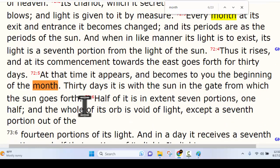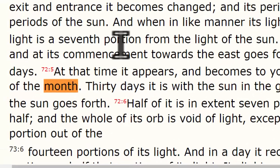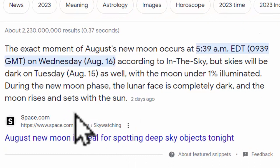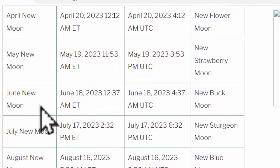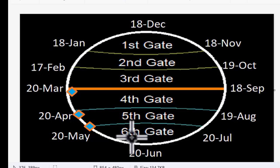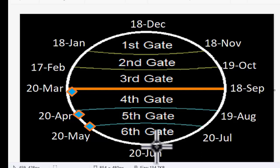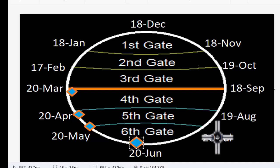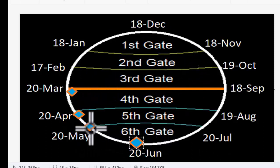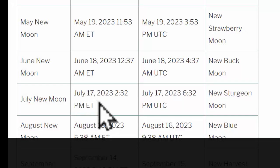Chapter 73 is talking about the moon and months. Notice what it says in verse 5: 'At that time it appears and becomes to you the beginning of the month.' So just like the website showed us, the new moon is dark. The one in June was on June 18th at 12:37. But notice — the gate window doesn't start until June 20th. So this new moon would have had to fall after June 20th to be considered in the next gate. This one came early and fell here — that's why Enoch used gates instead of months.